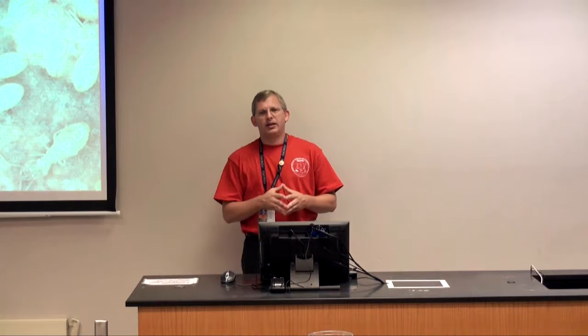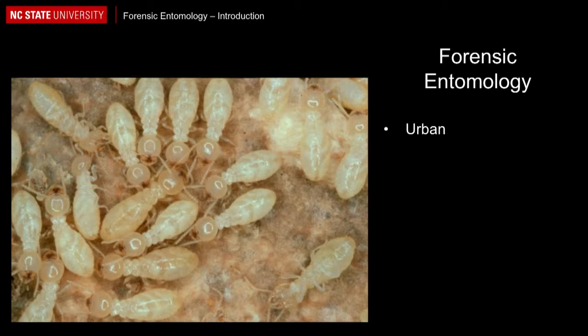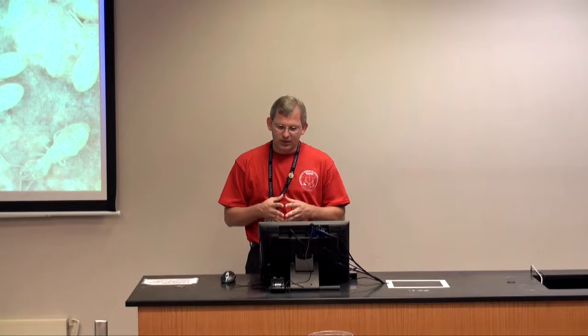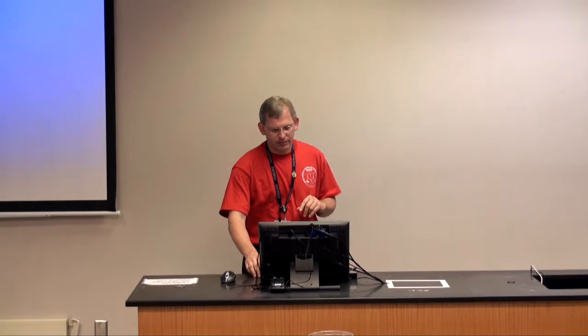There are three commonly recognized areas of forensic entomology. The first is urban forensic entomology, which is generally civil in nature. It affects us while we're alive and impacts us financially — for instance, termite damage to structures. Entomologists may need to determine whether required soil barrier treatments were done correctly, and whether building materials were contaminated before arriving on site, to establish who is financially responsible.